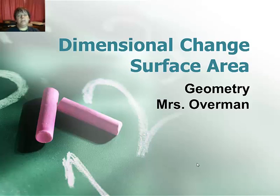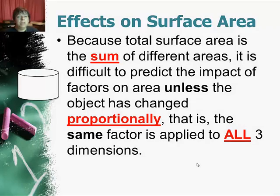In our previous unit we looked at the impact of dimensional change on perimeter and area of 2D shapes, basically two-dimensional polygons and circles, and also composite shapes. So now we're looking at the impact on solids, the surface area of the solids.